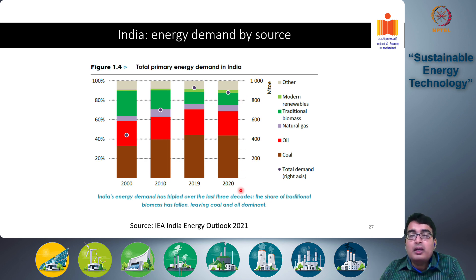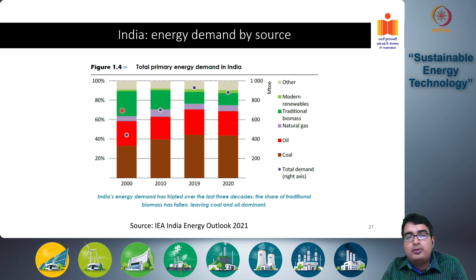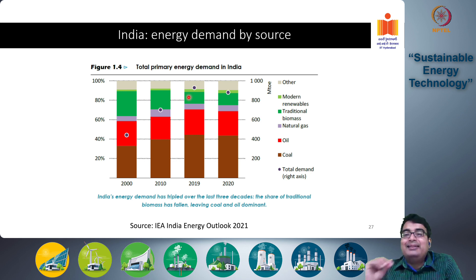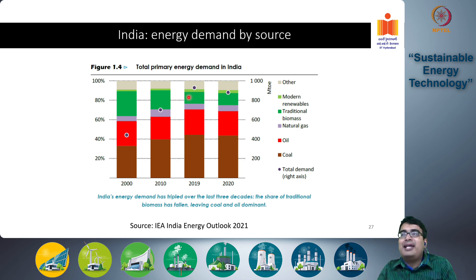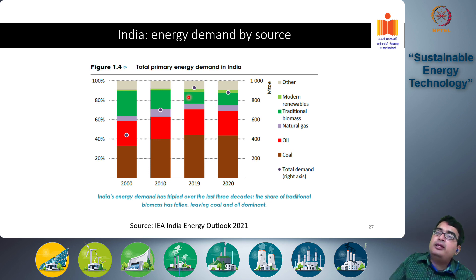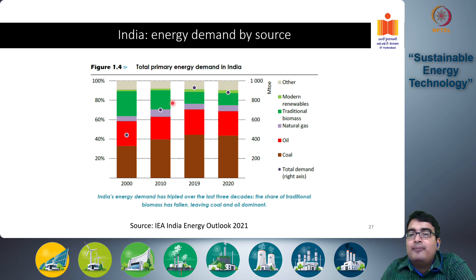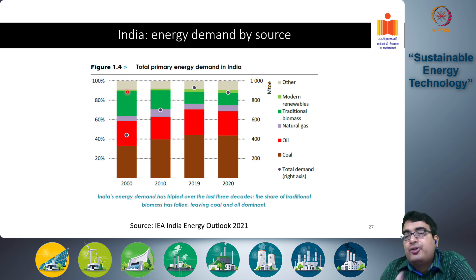Traditional biomass — villagers using firewood, charcoal, etc. for heating and cooking — was a huge chunk in 2000, more than 25 to 30 percent. This chunk has actually decreased, primarily driven by a shift from traditional wood-based chulas to modern gas stoves and LPG systems. The policy of putting gas cylinders in every village household is reflected here — traditional firewood use has moved to an LPG-based system.